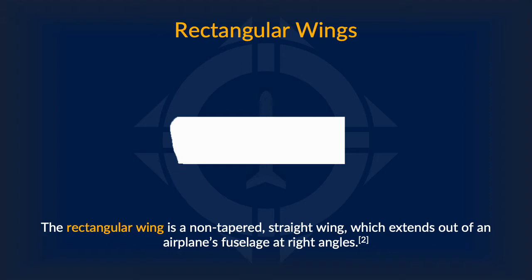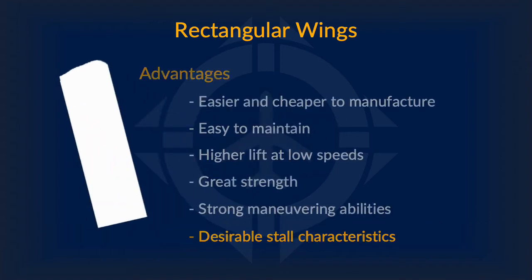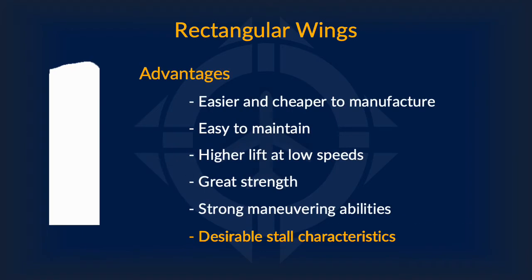Let's begin with the rectangular wing. As straightforward as any wing can be, it is a non-tapered wing, meaning that the edges do not angle inwards. It is also a straight wing which extends out of an airplane's fuselage. The advantages of a rectangular wing are pretty plentiful. It is one of the easiest and cheapest to manufacture due to the lack of complex curves and is easy to maintain for the exact same reason. They produce relatively higher amounts of lift at low speeds, have great strength, and also give strong maneuvering abilities.